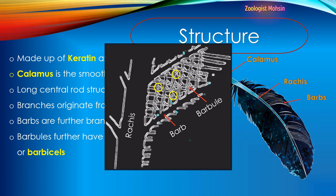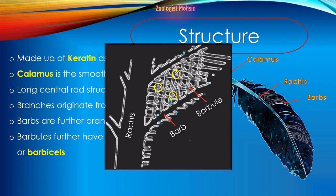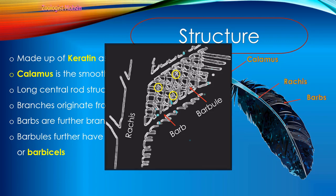Barbules further have hooklets called hamuli or barbicels. In this diagram you may observe that the rachis is divided into barbs, and barbs are further subdivided into barbules. Each barbule has small hooklets, which can be seen at the yellow circles. These hooklets provide entangling when barbules crisscross each other at 90-degree angles — hooks hold them together. When these feathers flap in the air, air will not pass through them, providing more buoyancy and more efficiency to flight compared to feathers without hooklets.